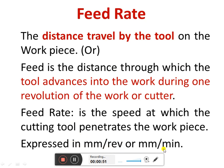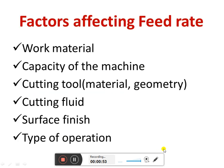The factors affecting feed rate are: work material — different materials require different feed rates; capacity of the machine — how much feed can be given on a particular machine; cutting tool — based on cutting tool material or geometry, it affects the feed rate; cutting fluid; surface finish of the work; and the type of operation.